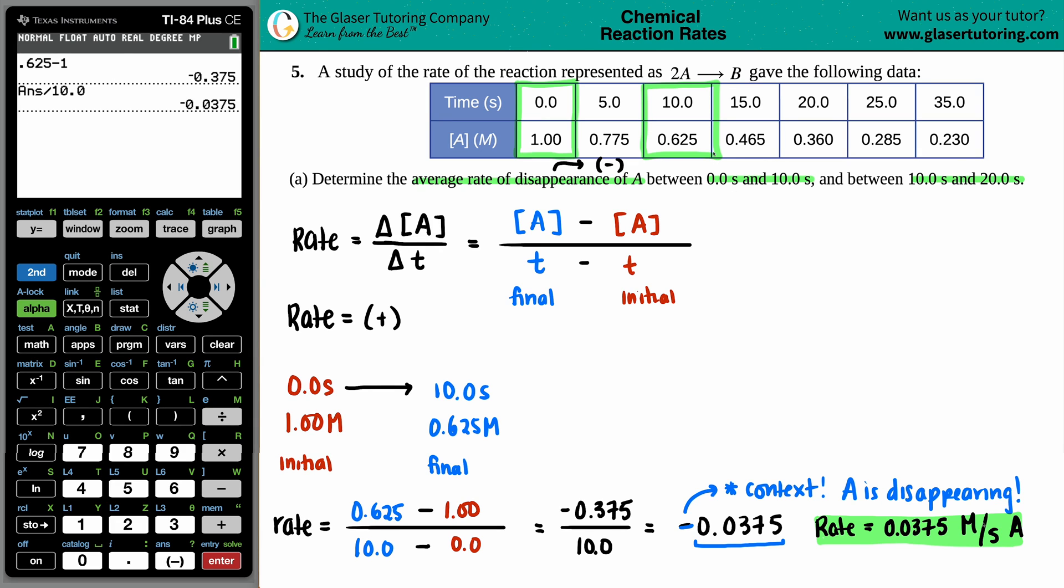We already know the 10 second value: 0.625 molarity. The 20 second value is 0.360 molarity. We have our two values, let's find the rate.